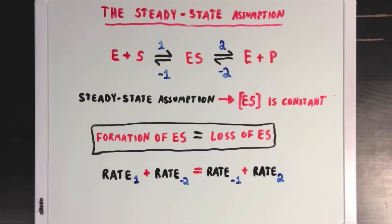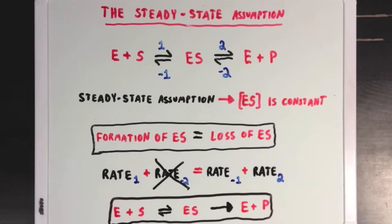Now, also remember that products very rarely go back to reactants, since these reactions are usually thermodynamically stable. So rate minus 2 is going to be so small in comparison to rate 1 that we can really just cross it out. Which means that we can swap out that second double-headed arrow for a single-headed arrow.